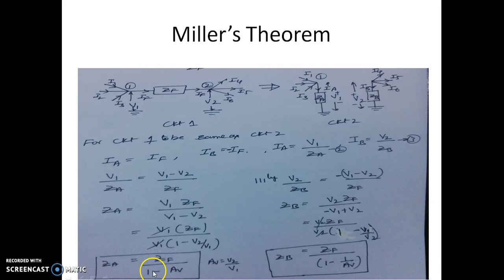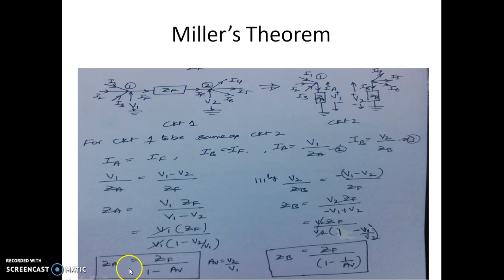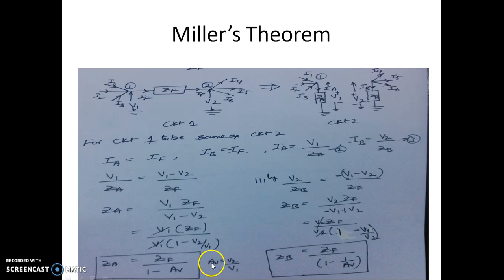So ZA = ZF / (1 - AV), where AV = V2/V1 is the voltage gain. This replaces the floating impedance ZF with a grounded impedance ZA at node 1. Similarly, by equating IB = -IF, we get the expression for ZB as ZF divided by (1 - 1/AV).